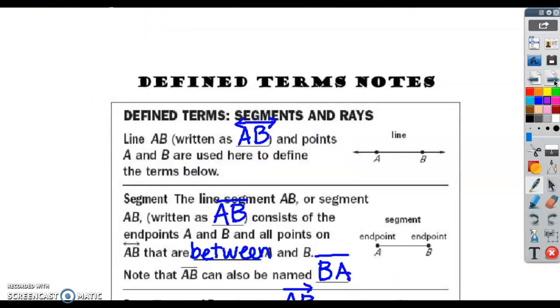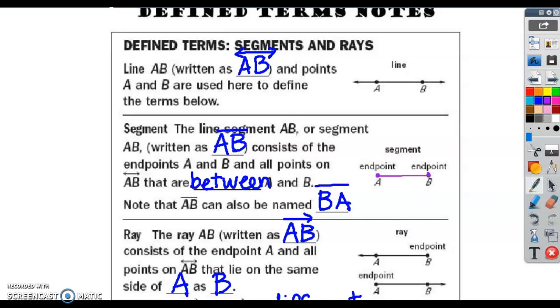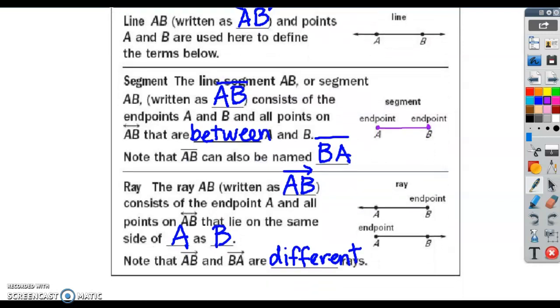Now we are moving on to defined terms, terms that we can define. A segment is part of a line. It has two endpoints. It starts and it stops. And you can call this segment here AB or BA. But that's a line segment. Same as a ray. A ray is also part of a line, but it only has one endpoint. And you always have to start with the endpoint name. See how the ray is going to the left? But it starts at B. This is ray BA. And the arrow, when you draw it, has to be going to the right.